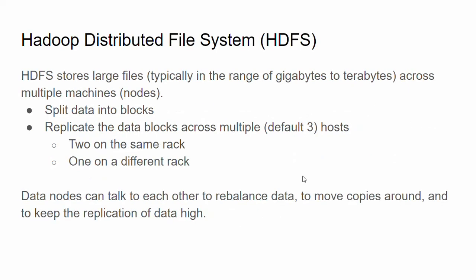HDFS stores large files, typically in the range of gigabytes to terabytes, across multiple machines or nodes. It splits data into blocks and replicates the data blocks across multiple hosts — three copies by default, with two on the same rack and one on a different rack. Data nodes can talk to each other to rebalance data, move copies around, and keep replication high, which is managed automatically by HDFS, similar to how cloud storage accounts manage replication.